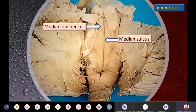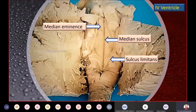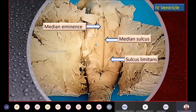Immediately lateral to the median eminence is a dotted line — actually a sulcus called the sulcus limitans. The sulcus limitans is an important structure in this discussion. It is traced on one side shown here, but it is present on both sides. As you trace the sulcus limitans upwards, you can see it continues higher up.